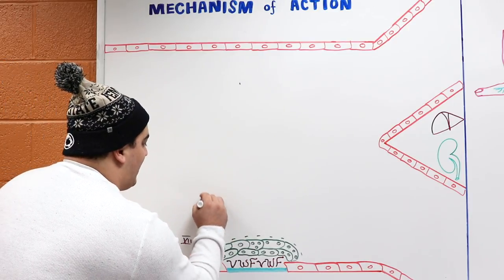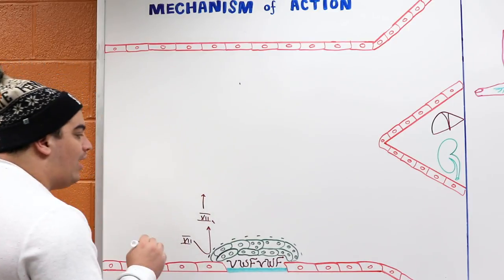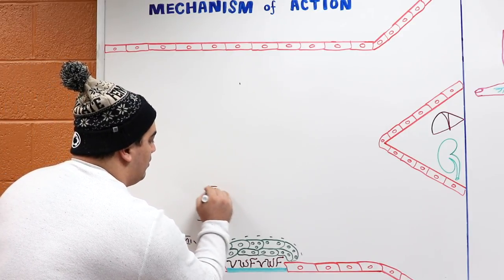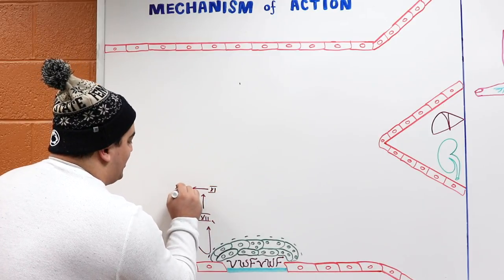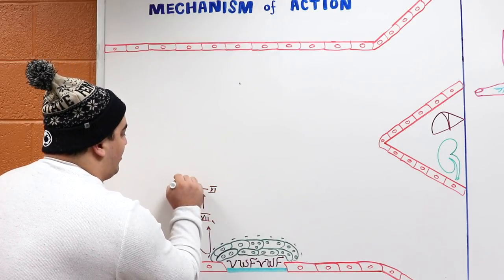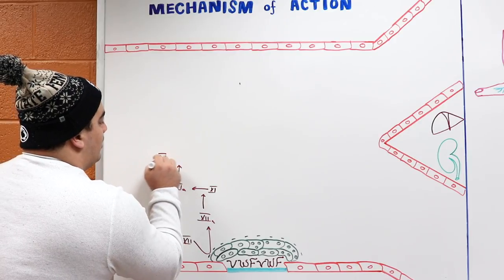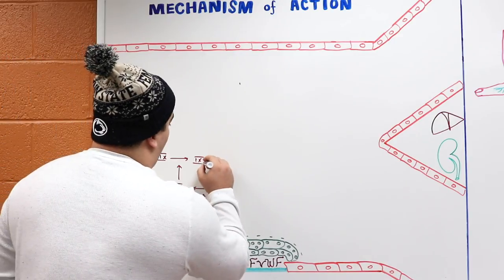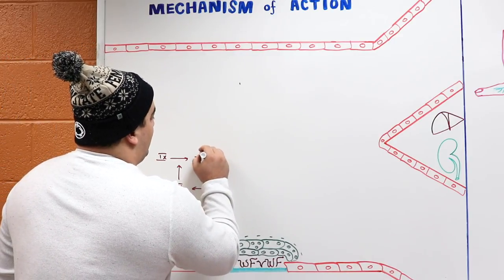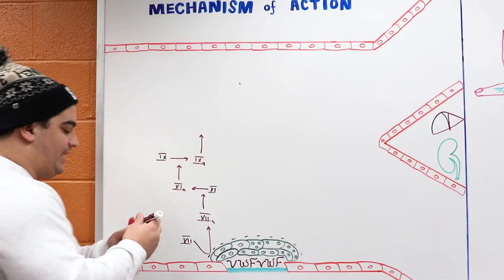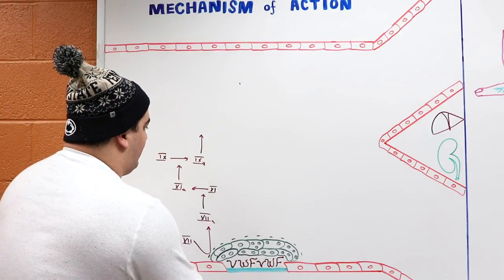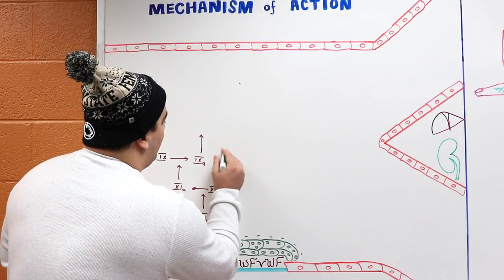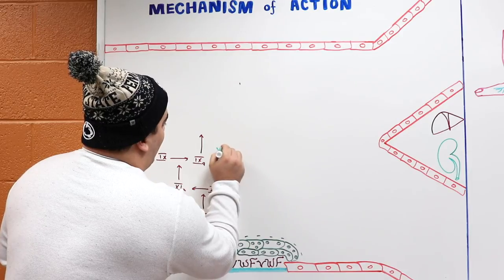Factor 12 activates factor 11. Then factor 11 activates factor 9. There's another molecule called factor 8, which is also going to be utilized and gets activated through thrombin. Factor 9 and factor 8 then combine.